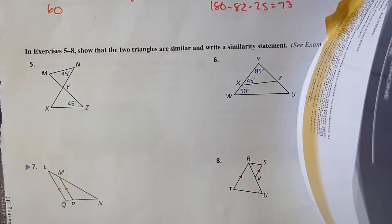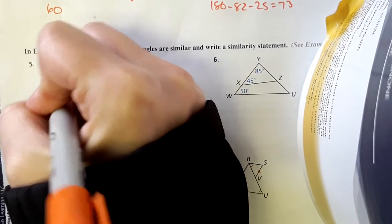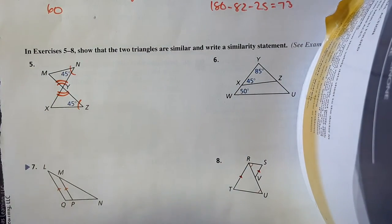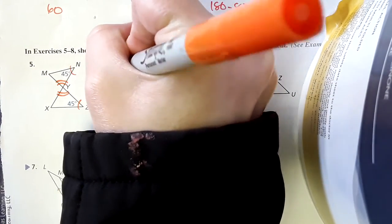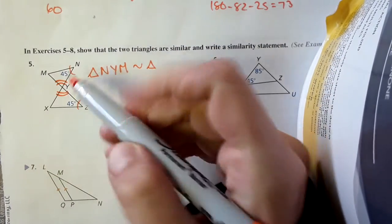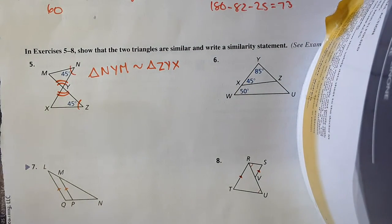In exercises five through eight, show that the two triangles are similar and write a similarity statement. Okay. So, in number five, they show us that these two angles are equal. That's cool. And they don't say anything else. But, we do have vertical angles. And vertical angles are equal, so this must equal this. And so, since we have these two angles equal in each of them, then those triangles are similar. So, triangle N, Y, M is similar to triangle. And I need to make sure to do it in the same order. So, Z, Y, X.